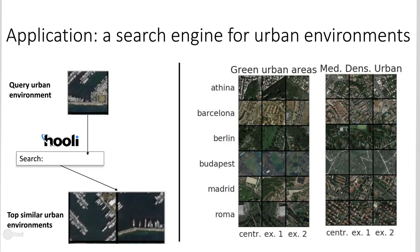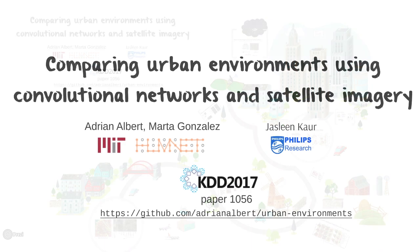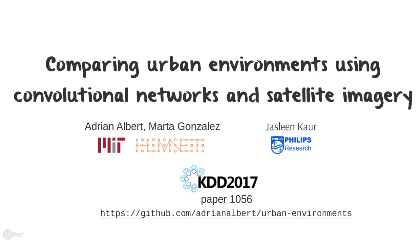Now that we have trained models of urban environments, we can use them in applications. We are currently developing a search engine for urban environments. Given a query environment, our model can identify similar neighborhoods across cities that have similar characteristics. This will enable applications such as benchmarking the built environment for urban planning or building energy analysis. More information is in the paper and at our GitHub repository for the project.